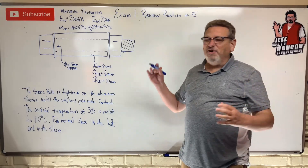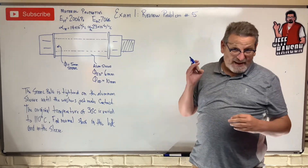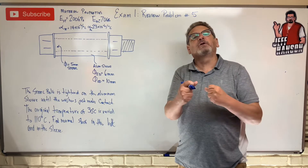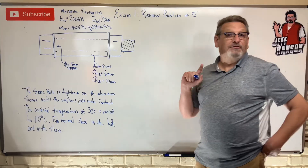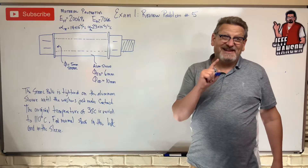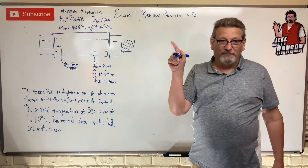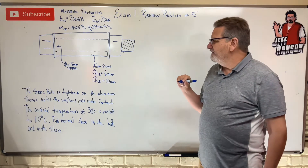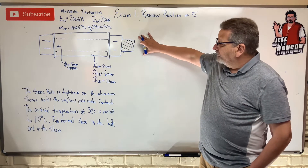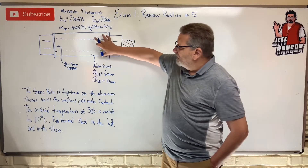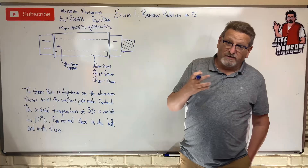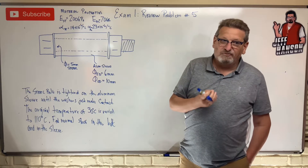Welcome back. Today we're talking about exam one review problem number five — we're getting ready to make a hundred on our exam. This is a thermal expansion problem, specifically a statically indeterminate thermal expansion problem. We've got a steel bolt with an aluminum sleeve around the outside of it. Steel and aluminum are two different materials and when they heat up, they don't grow at the same rate.